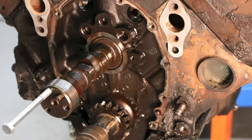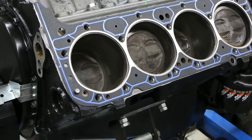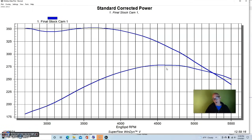flat tappet camshaft, dish pistons, and these turned out to be 10 or 15 thousandths down in the hole, in addition to being a dish piston.